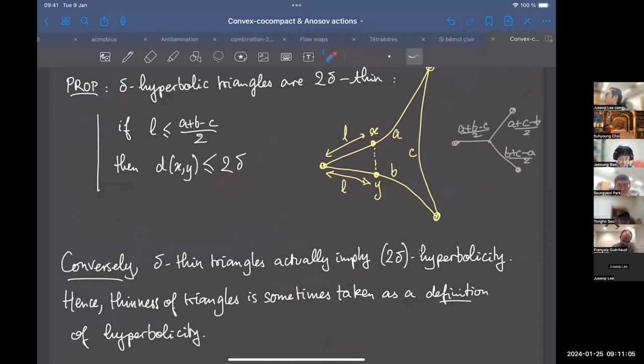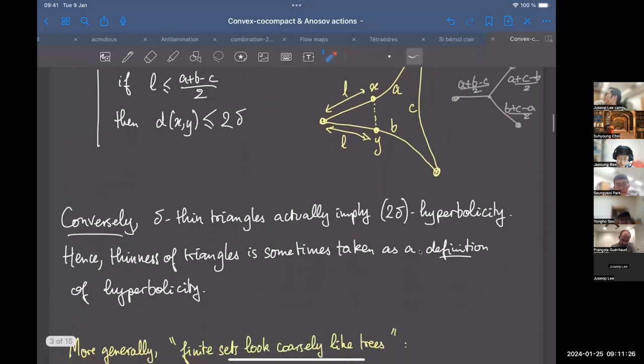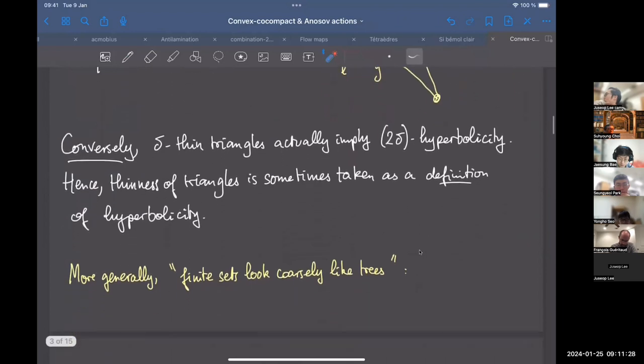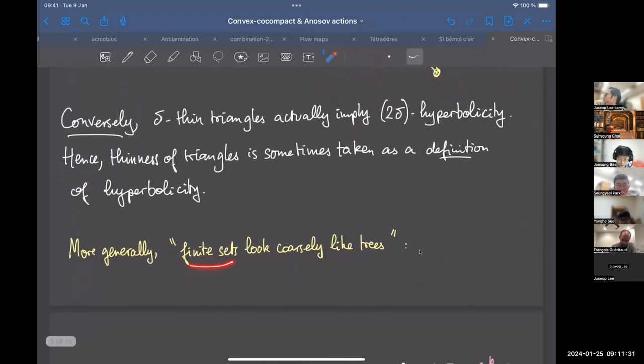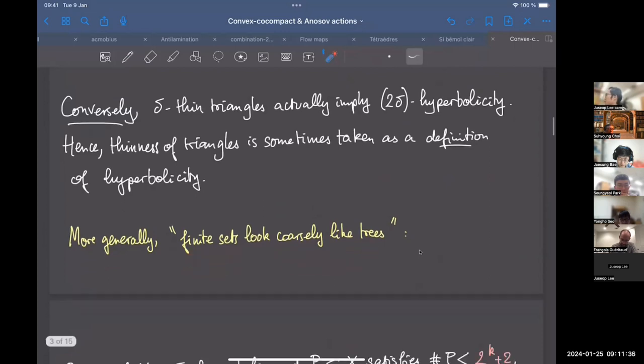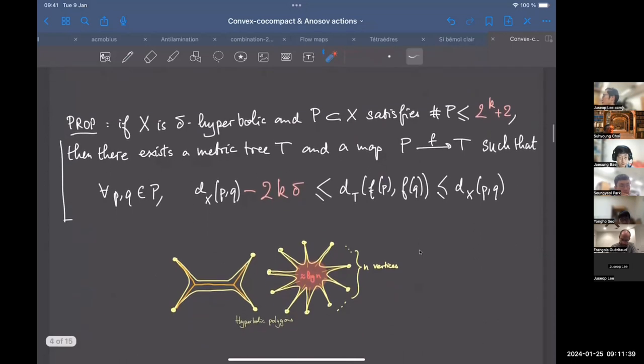When you have a triangle in a delta hyperbolic space with side lengths A, B, and C, and you take two points on the sides A and B that are the same distance from the common vertex, and this distance is at most (A+B-C)/2, then the distance between them should be at most 2δ. We can prove that in fact this is a characterization. So if you have something delta hyperbolic, all the triangles are 2δ thin. And almost conversely, if you have something where triangles are δ thin, then you're 2δ hyperbolic.